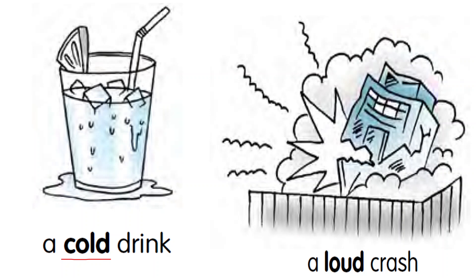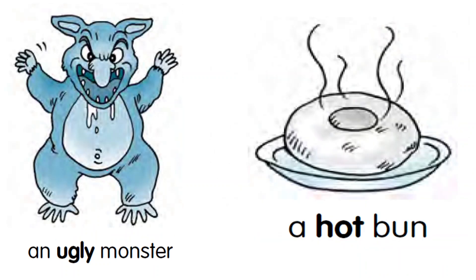An ugly monster — ugly is the quality. Beautiful, ugly — these are two qualities. So ugly is the adjective of quality which is describing the noun monster. A hot one — hot is the quality of the noun, so here it is the adjective of quality. A beautiful rainbow — beautiful is the quality of the noun. Beautiful is the adjective of quality which is describing the noun rainbow.